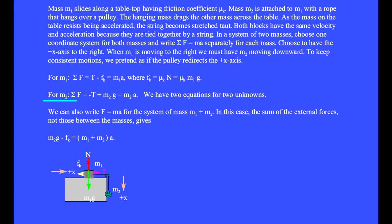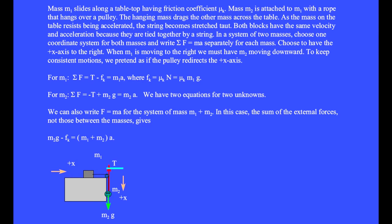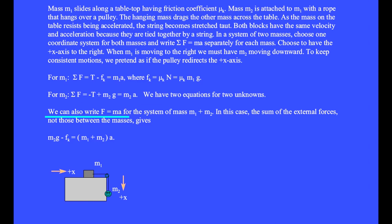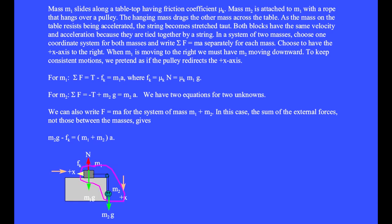For mass m2, the sum of the forces equals minus T plus m2g equals m2a. We now have two equations for two unknowns. We can also write F equals ma for the system of mass m1 plus m2. We draw a circle around m1 and m2 and add up only the force arrows that poke through the envelope. In this case, the sum of the external forces, not those between the masses, gives m2g minus fk equals (m1 plus m2) times a.